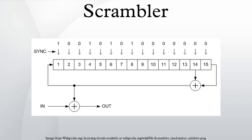In telecommunications, a scrambler is a device that transposes or inverts signals or otherwise encodes a message at the transmitter to make the message unintelligible at a receiver not equipped with an appropriately set descrambling device.